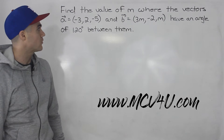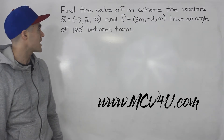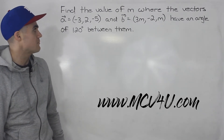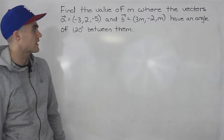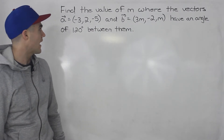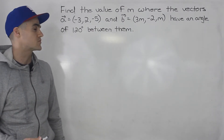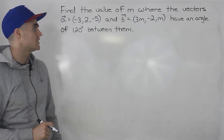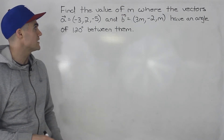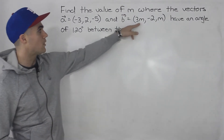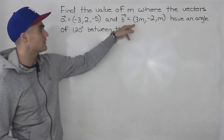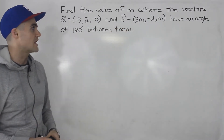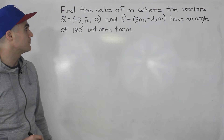we have to find the value of m where vector a, which is negative 3, 2, and negative 5, and vector b, 3m, negative 2, and m, have an angle of 120 degrees between them. This question is pretty difficult. What makes it difficult is that we have these multiple m values within vector b, and as you'll see, the algebra is going to get pretty tricky.